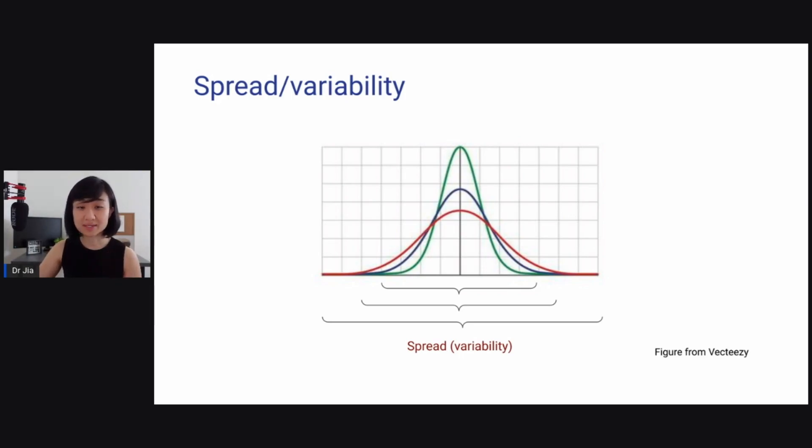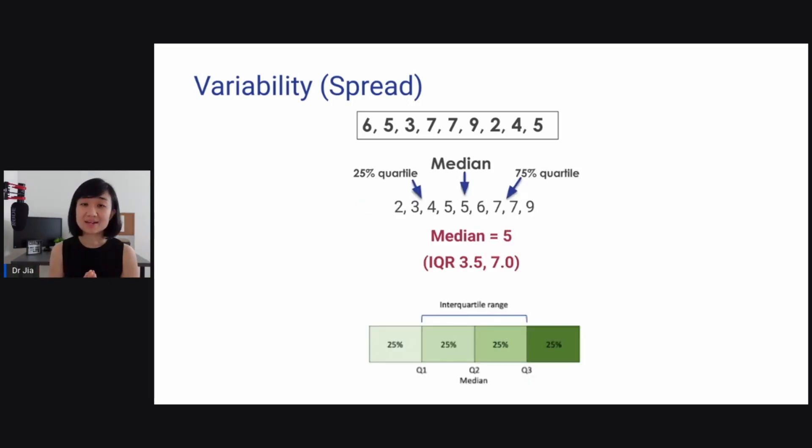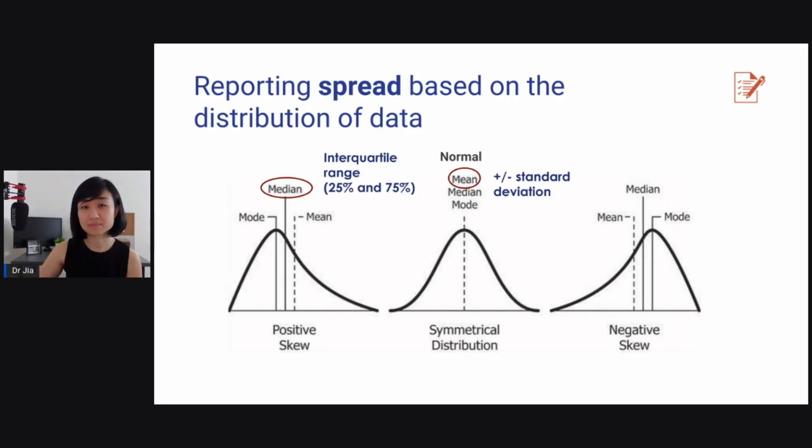Next, we need to know the spread and the variability. The same example, because this is a normal distribution, the right and the left or the standard deviation are equal on both sides. So we can use plus or minus one standard deviation. So that's how we define the spread. Next, if you have data that is not normally distributed, your standard deviation, if you use standard deviation, it's not going to be equal on both sides. So instead, what you want to do is to report on the interquartile range, which is you split the whole data into 25%, 25%, 25%, 25% quartile, and know where they are at. So in this example, median is 5, the 25% interquartile range is 3.5, and the 75th quartile is 7.